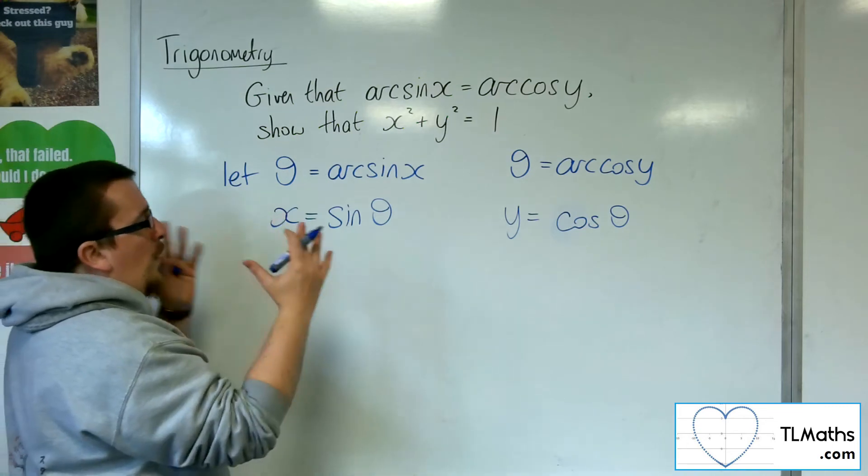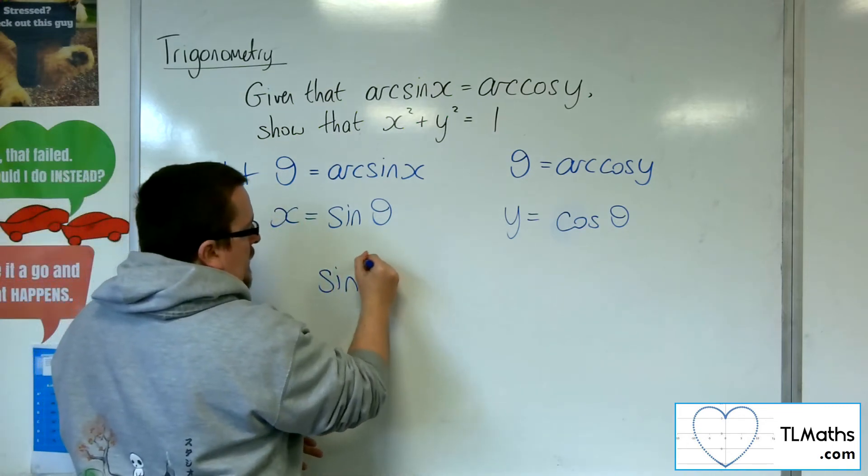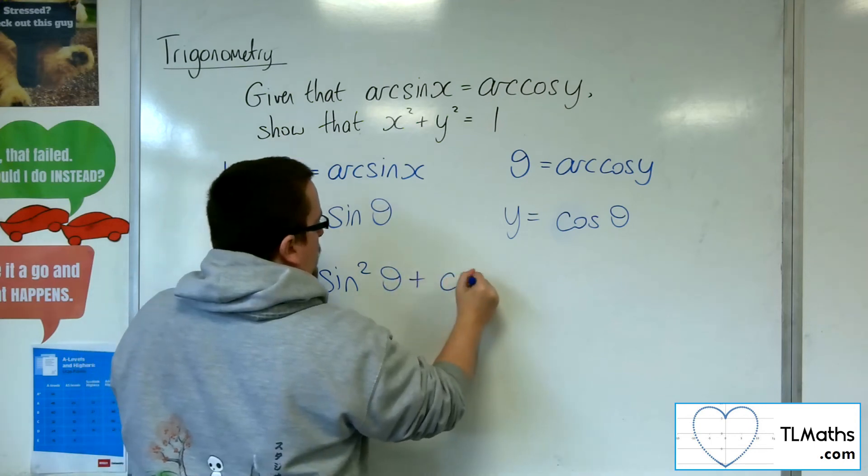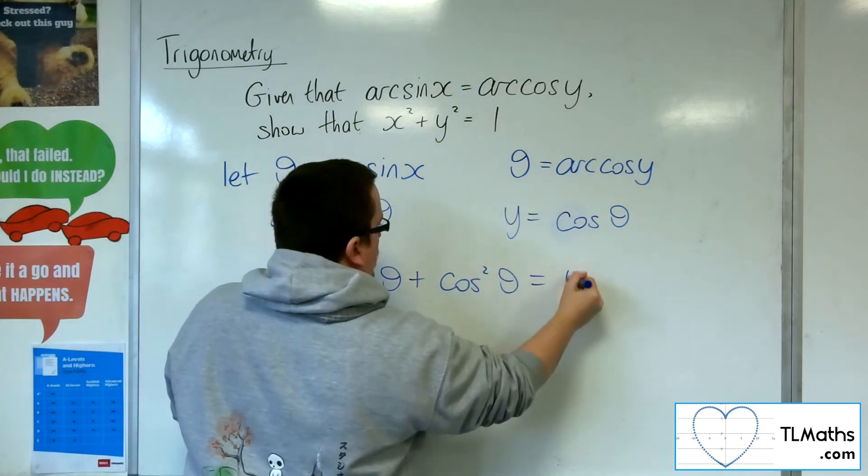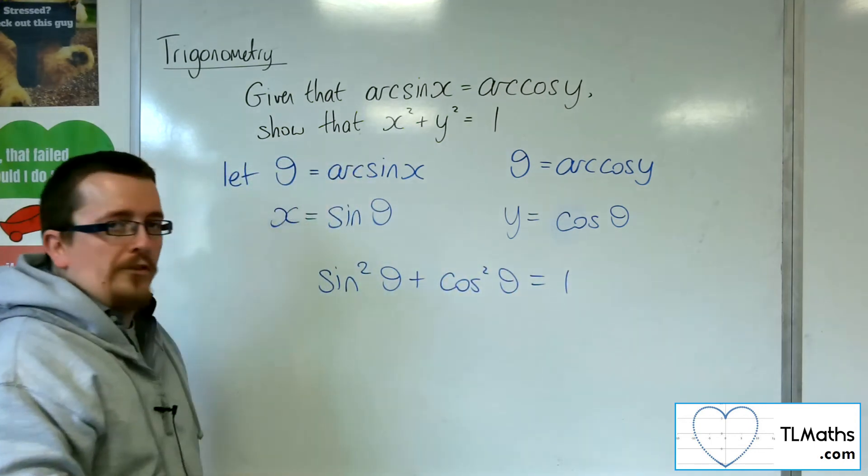And we can then say, well, I know a trig identity that joins sine and cosine together. And it's the old favorite: sin²θ + cos²θ = 1.